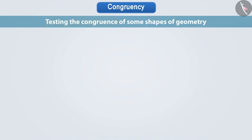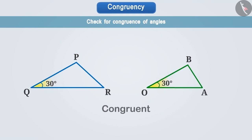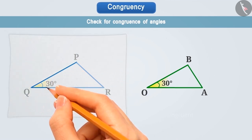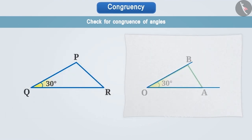Now let's talk about congruency of angles. Let's find out. We will create angle PQR on trace paper and place it on angle AOB. On adjusting,